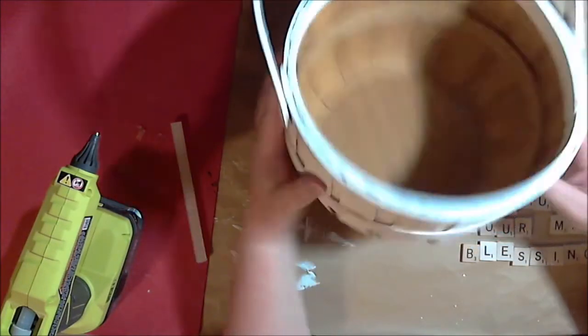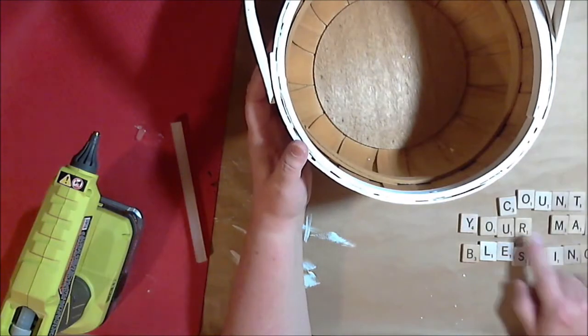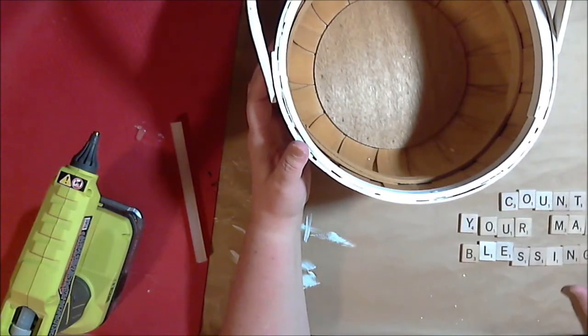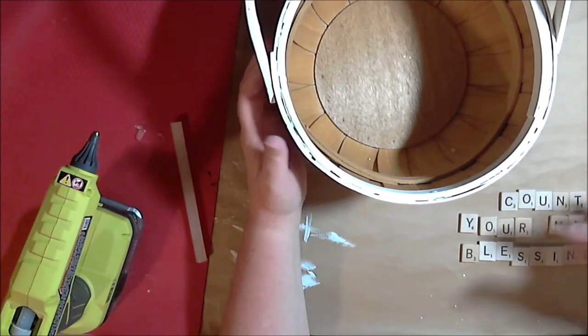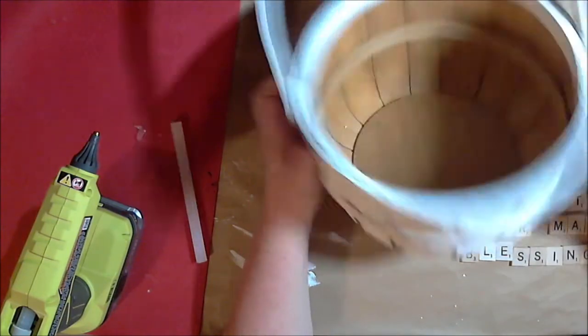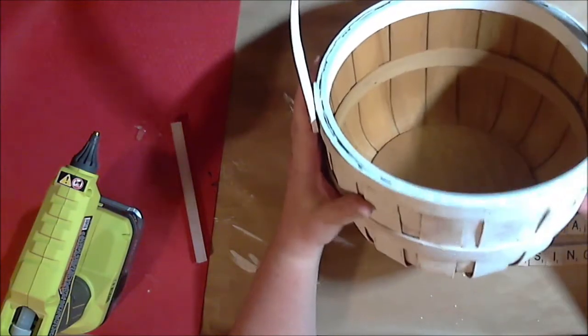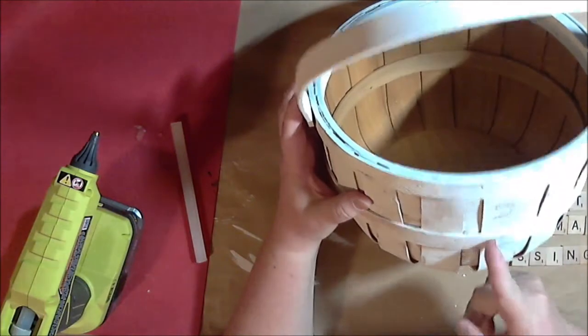So the first thing I'm going to do now is add the words count your many blessings, and I'm going to do that with Scrabble tiles. So I have those all laid out and I put the handle up and decided where my center was.